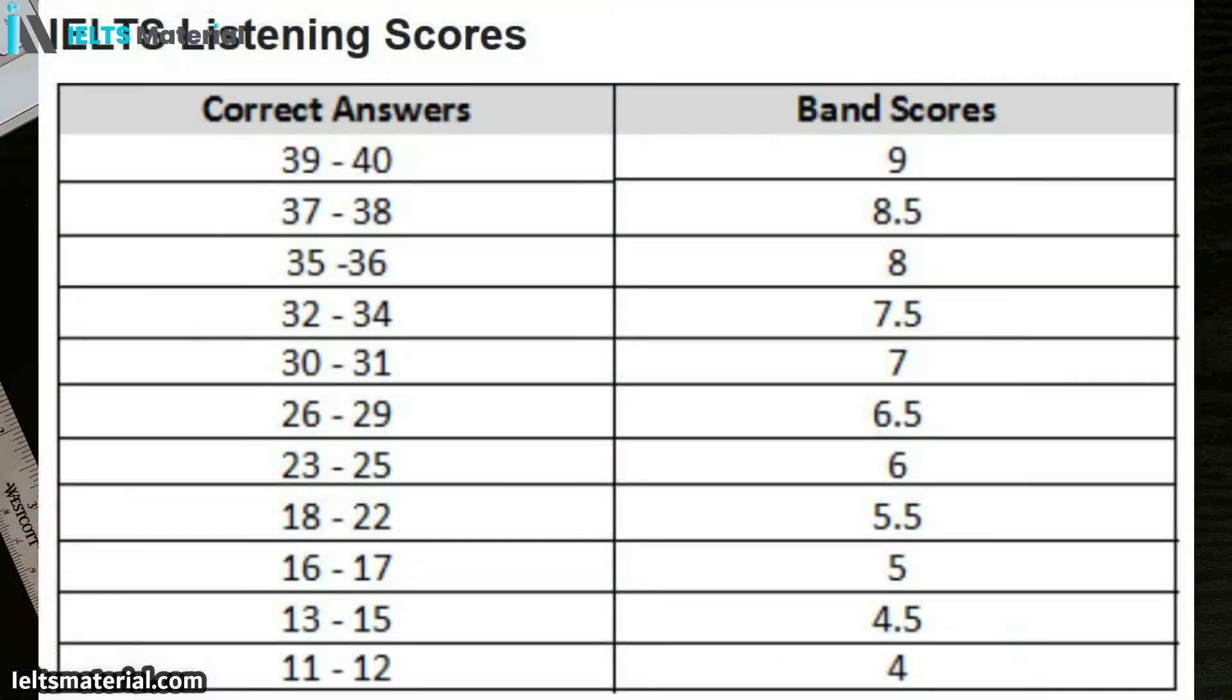As you can see, it's pretty straightforward. If you get 39 to 40 correct, that's a band score 9. If you get 11 to 12 correct, that's only a band score 4. A very popular score is around 26 to 31, and you can see 30 to 31 is a 7, 26 to 29 is a 6.5.